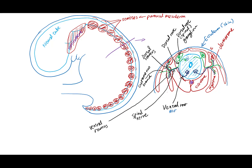We can also see why the ventral root is comprised entirely of motor fibers and the dorsal root comprised entirely of sensory fibers, while the spinal nerves, the ventral and dorsal rami, are comprised of both motor and sensory fibers. And the cutaneous branch is comprised only of sensory fibers.